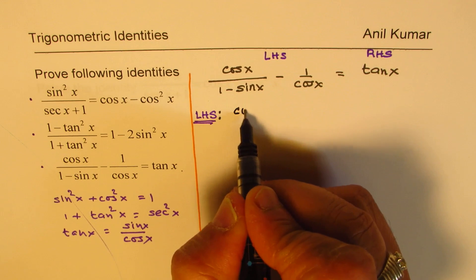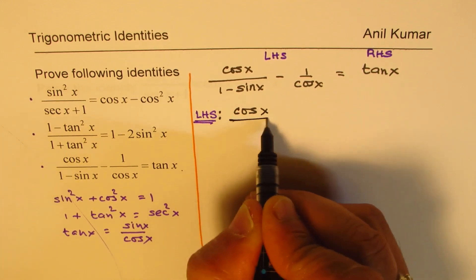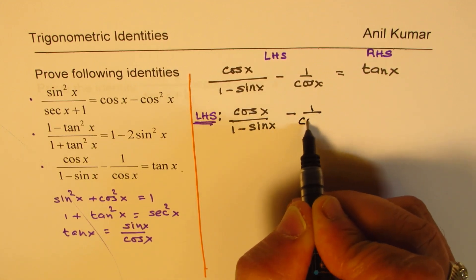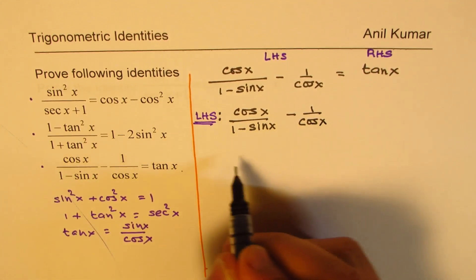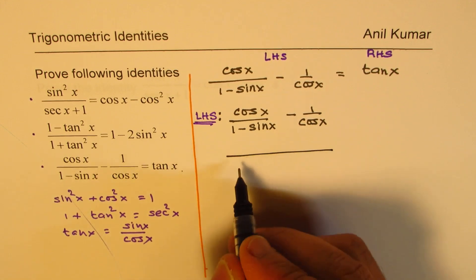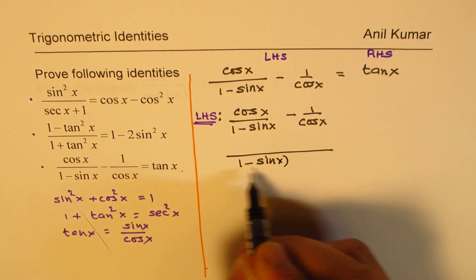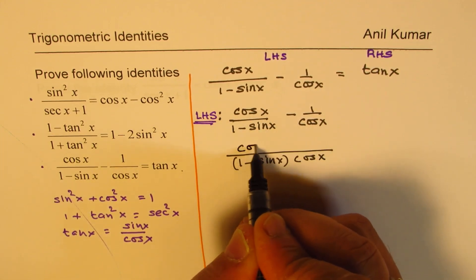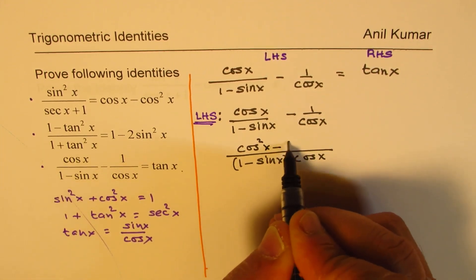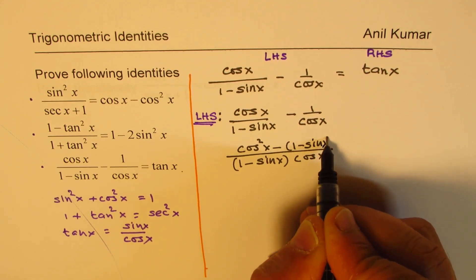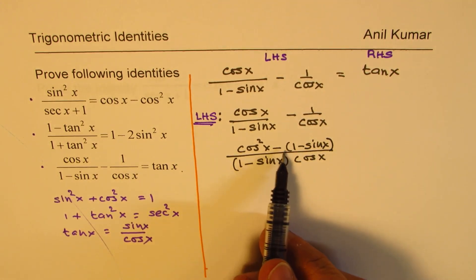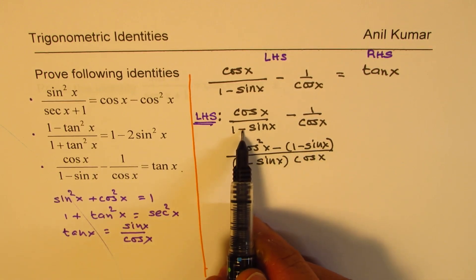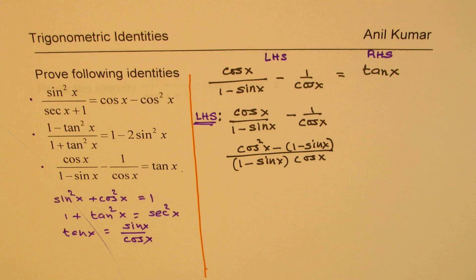We begin with the left-hand side: cosine x over 1 minus sine x, minus 1 over cosine x. Take a common denominator, which is (1 minus sine x) times cosine x, and cross multiply to get cosine squared x minus (1 minus sine x). It is important to write this in brackets — otherwise you may miss that the terms become positive when you expand.